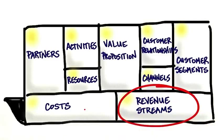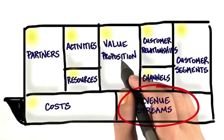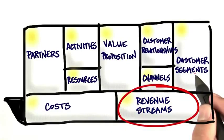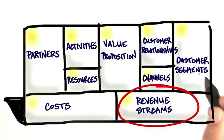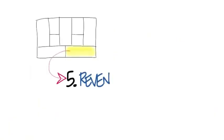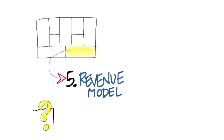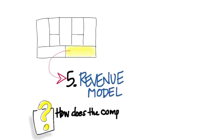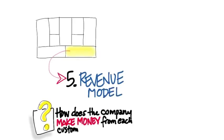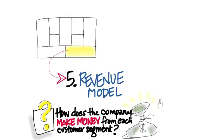The next thing is revenue streams — how do you actually make money from your product and service being sold to customer segments? Revenue streams basically ask the question: what value is the customer paying for? And it has you think about what's the strategy of how you're going to capture that value.